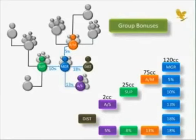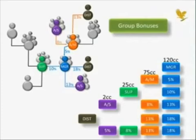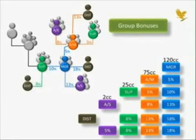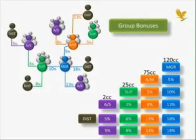Similarly, Assistant Managers earn a bonus of 13% on their directly sponsored new distributors, 8% on their directly sponsored Assistant Supervisor networks, and 5% on their Supervisor networks. Supervisors receive a bonus of 8% on their new distributor networks and 3% on their Assistant Supervisor networks. Assistant Supervisors earn a 5% bonus on their new distributor networks.